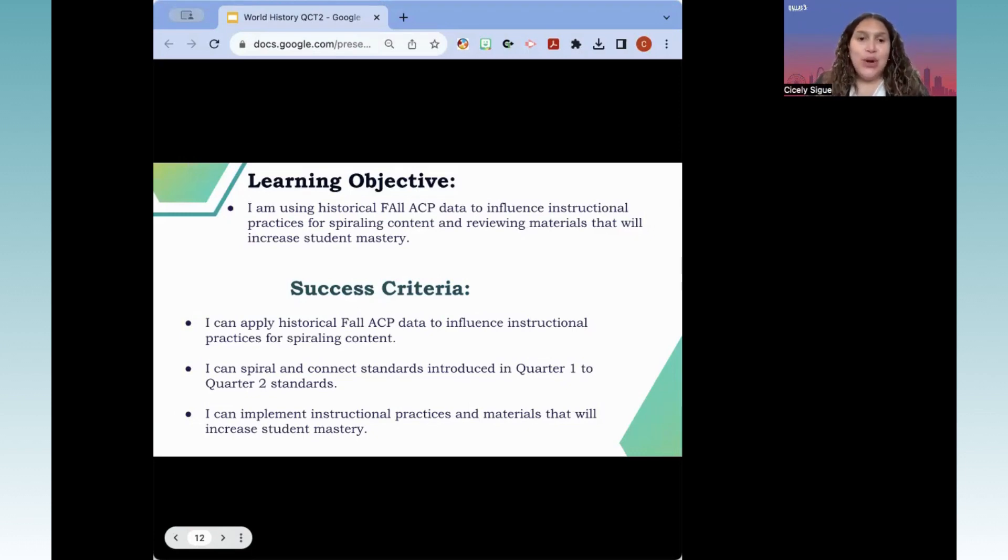So now let's talk about what we're going to be doing throughout this session for today. Starting with the learning objective. I am using historical fall ACP data to influence instructional practices for spiraling content and reviewing materials that will increase student mastery. The success criteria for this session today is: I can apply historical fall ACP data to influence instructional practices for spiraling content. I can spiral and connect standards introduced in quarter one and quarter two. I can implement instructional practices and materials that will increase student mastery.